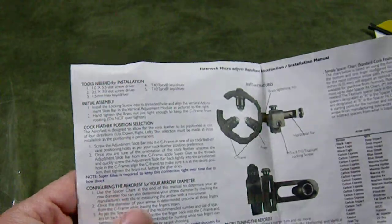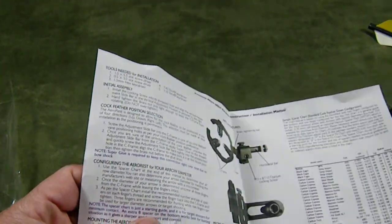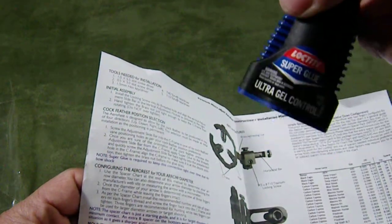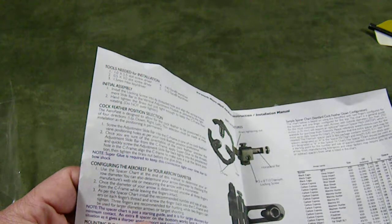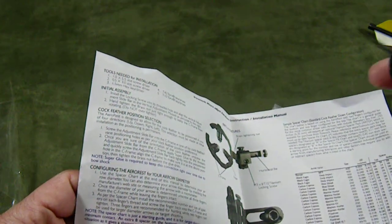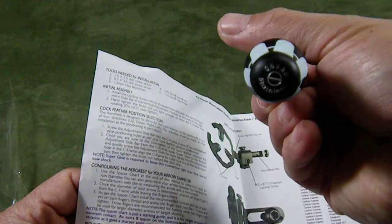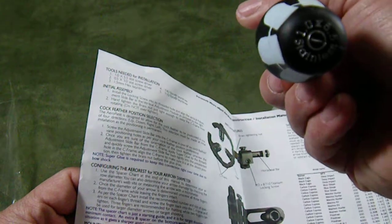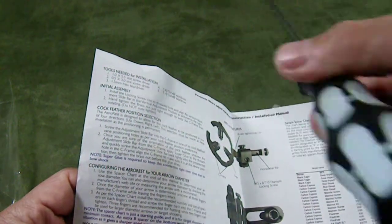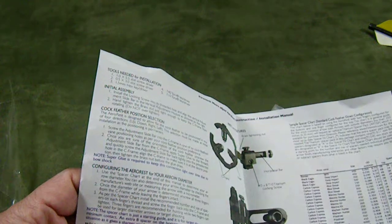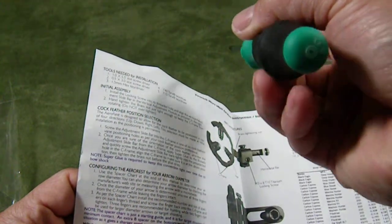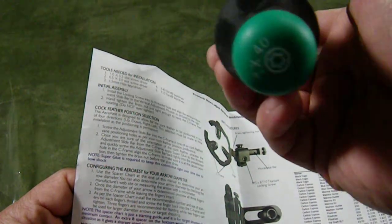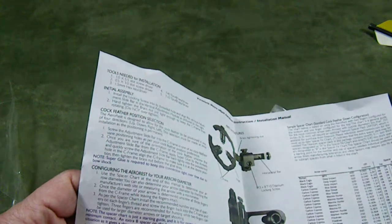To successfully install the arrow rest micro adjust, you're going to need a few things. I find the best is Loctite super control gel, which is needed. You need two screwdrivers: a 0.5x3.0 slot for tension and a 1.0x5.5 for the fingers. You also need this piece, a Torx T10, and to put the rest on the bow you need a Torx T40. Yes, you do need Torx.